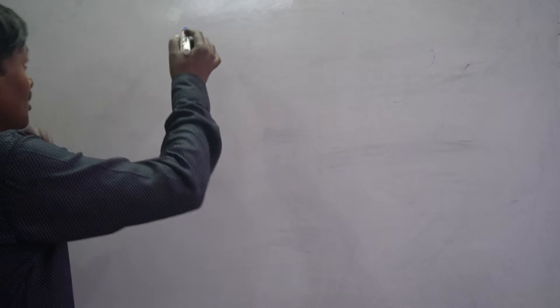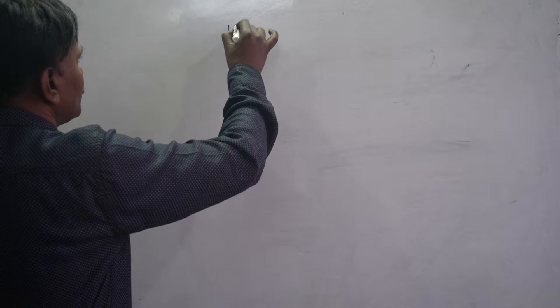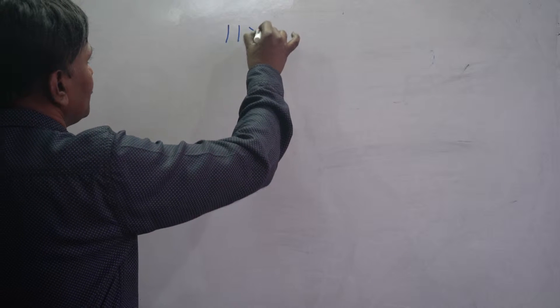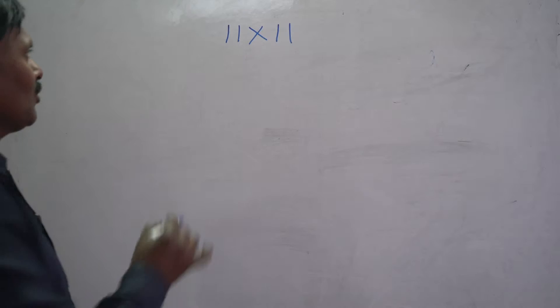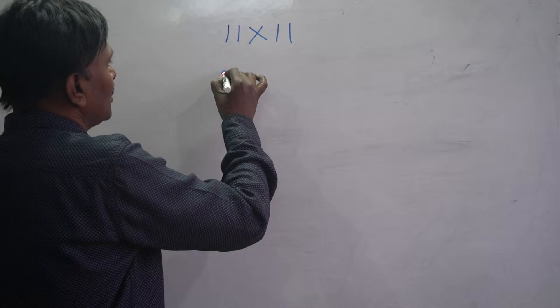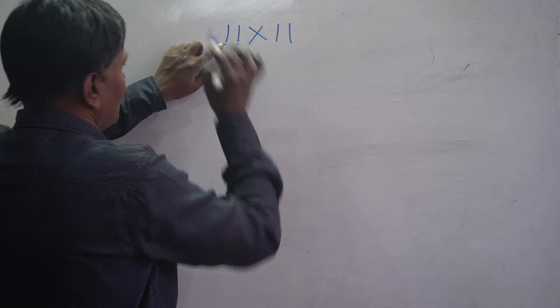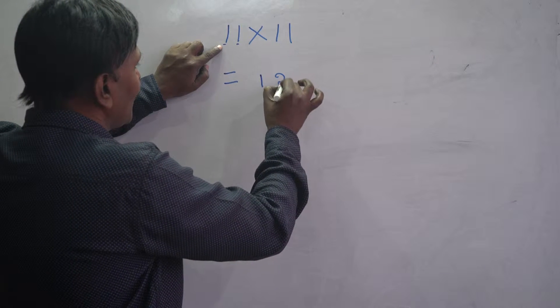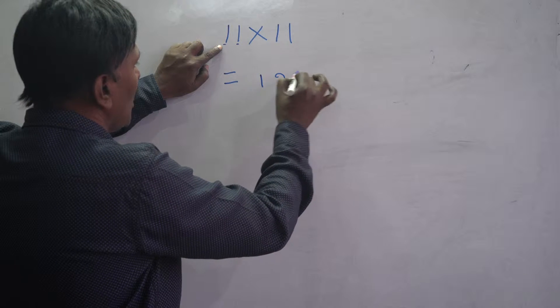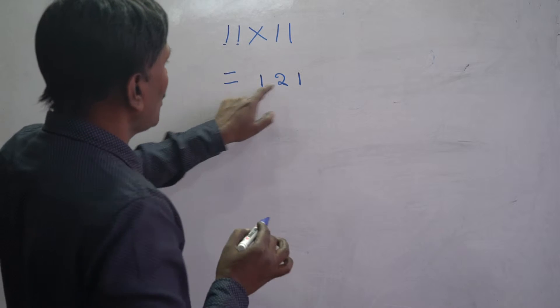Hi, this is Srinivas. Today we will see some problems based on multiplication patterns. Let's start with 11 times 11. How to do this one? This has two ones, right? 1, 2, and the reverse of one: 1, 2 and 1. So 1, 2, 1.